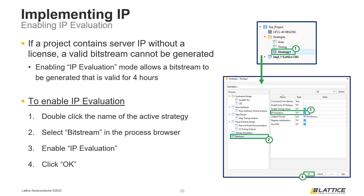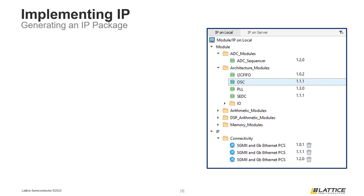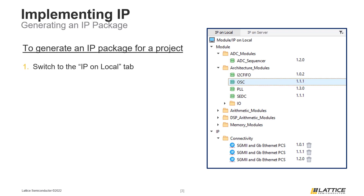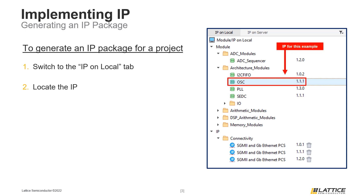We are now going to review the general process for implementing an IP package in a Lattice Radiant project. To begin generating an IP package, switch to the IP on local tab of the IP catalog. This area will contain all the IP that is available for use in a Lattice Radiant project. From the IP on local tab, locate the IP you want to install. For this example, we will be generating the oscillator IP package.